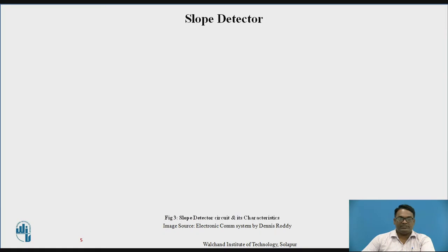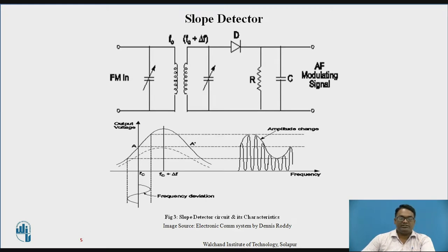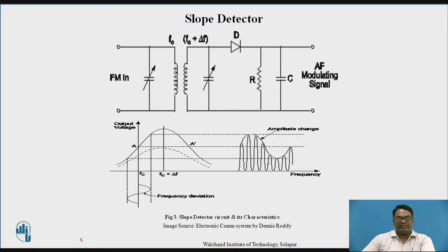First we are going to see the slope detector. This is the circuit for the slope detector and its particular frequency response. The slope detector is essentially a half wave rectifier — if you remove the two tuning capacitors from the primary and secondary windings, you get the basic half wave rectifier circuit. The capacitors C1 and C2 are tuned so they receive only the required signals, which lie between Fc and Fc plus delta-F, where delta-F is the frequency deviation.